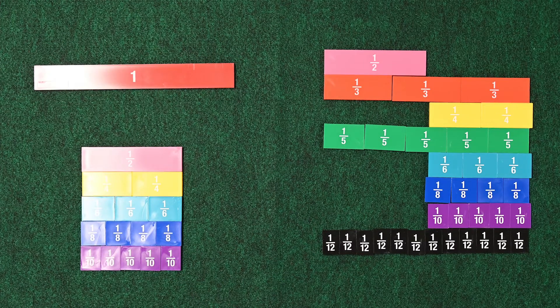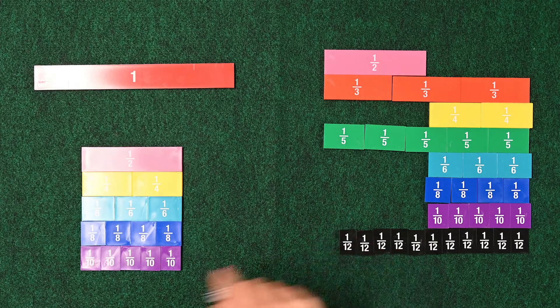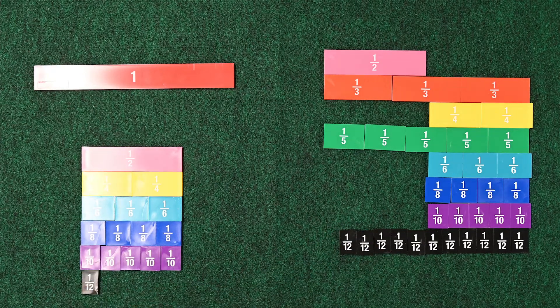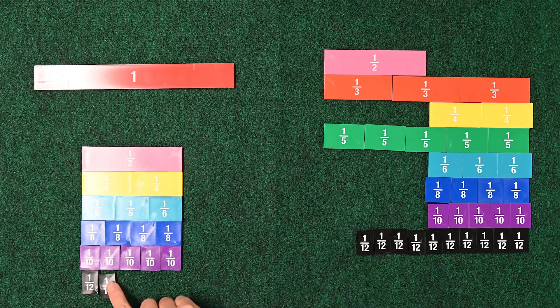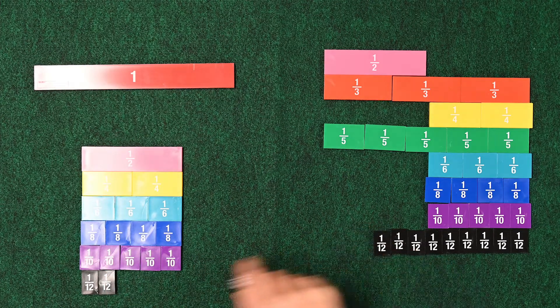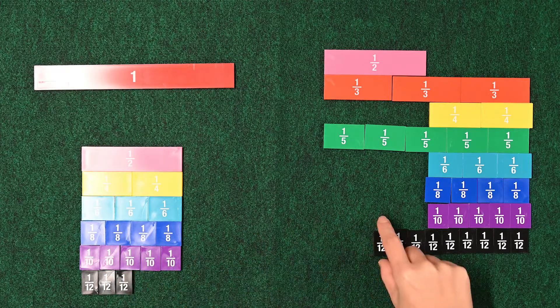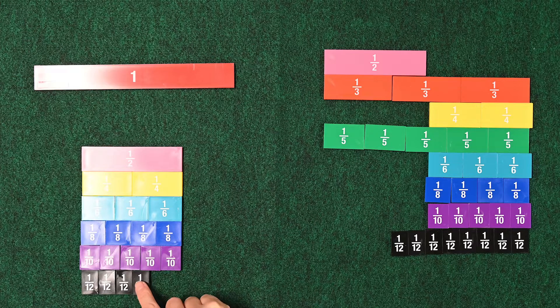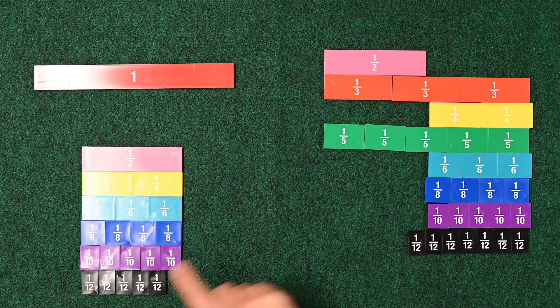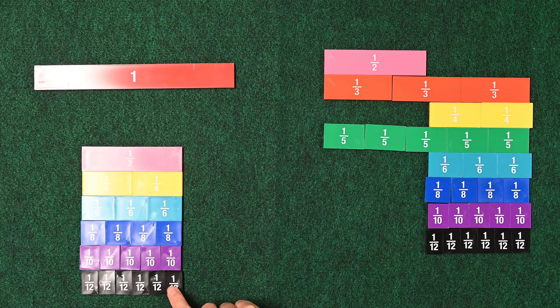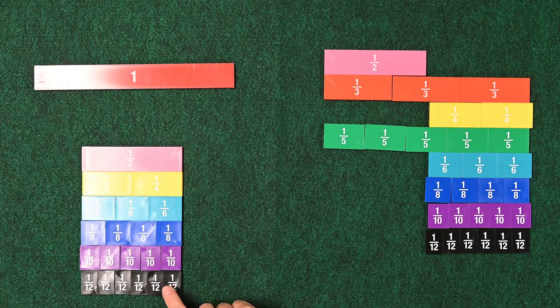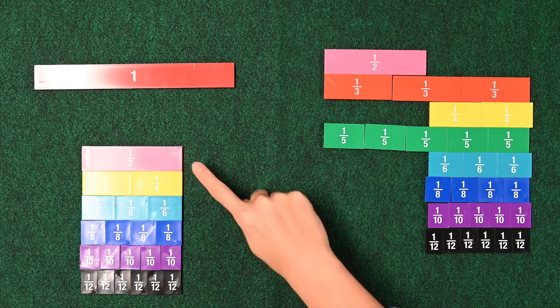Shall we try our 12ths? Let's try our 12ths. 1 12th. 2 12ths. 3 12ths. 4 12ths. 5 12ths. And 6 12ths. 6 12ths makes 1 half.